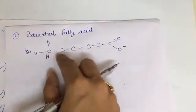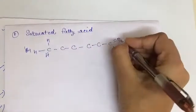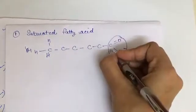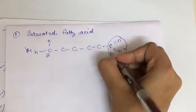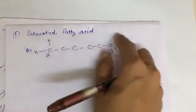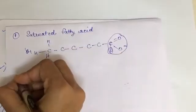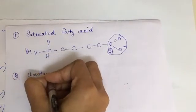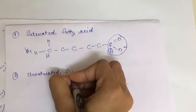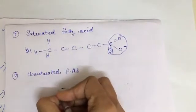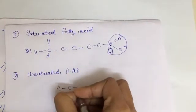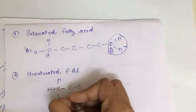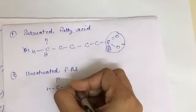In a saturated fatty acid there is an absence of double bonds. The carboxylic group is the first functional group and the numbering of carbons starts from this group. In the case of unsaturated fatty acids, we see the presence of double bonds in the chain.